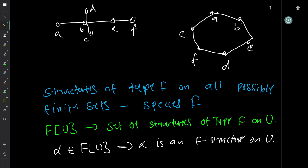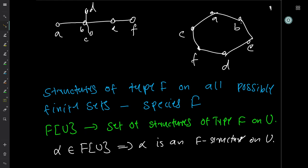Here is an example of two different structures on the set {A, B, C, D, E, F}. One structure is a tree: A to B is an edge, B to C, B to D, B to E, and E to F. On the same set, I can put another structure: C to A, A to B, B to E, E to D, D to F, and F to C — which is a cycle. These two are different types of structures: one is a cycle, one is a tree.